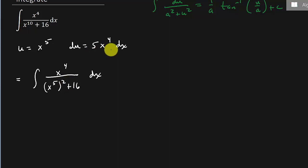Now notice I've got the 5x to the fourth dx. Well, there's x to the fourth dx. I need a 5. So if I multiply by 5, I've got to come out here and multiply by one fifth. And so that's going to be one fifth integral. And now all of this I'm going to replace with du, and then I'm going to take the u and plug it in to x to the fifth. So that's u squared plus 16.